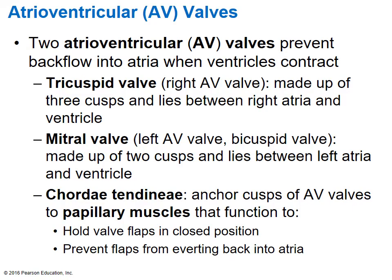Let's give the valves specific names. The AV valves are between the atrium and ventricle, and their whole purpose is to prevent backflow. You have one on the right and one on the left. The right AV valve is called the tricuspid valve because it's made of three cusps. The left AV valve goes by two other names: the bicuspid valve, because it's made of two pieces, or the mitral valve. So for the left side you have three options: left AV valve, bicuspid valve, or mitral valve.